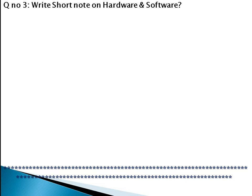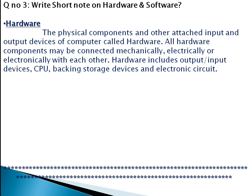Write a short note on hardware and software. First, write down the heading 'Hardware' and then write the text paragraph. The physical components and other attached input and output devices of a computer are called hardware. All hardware components may be connected mechanically, electrically, or electronically with each other. Hardware includes input and output devices, CPU, backing storage devices, and electronic circuits.